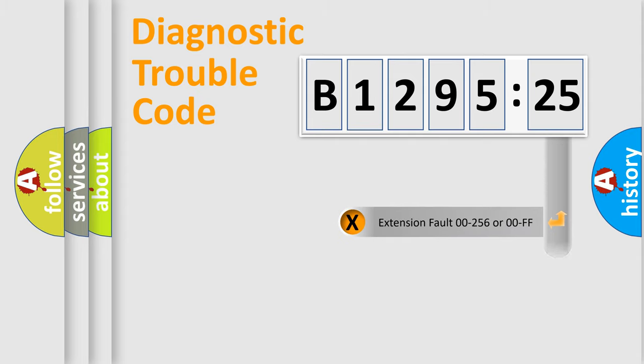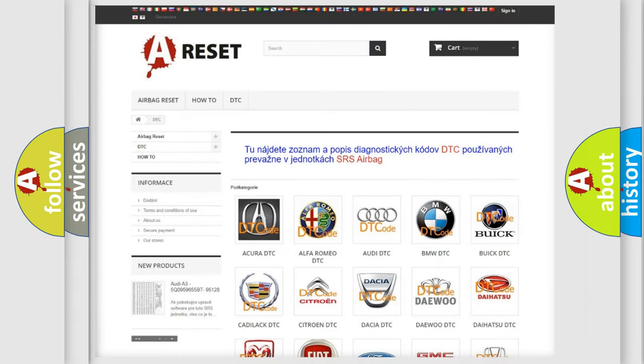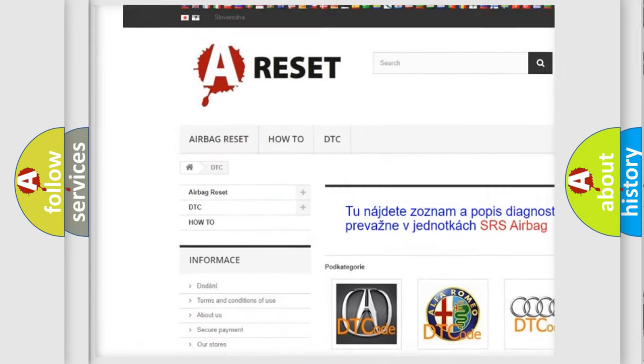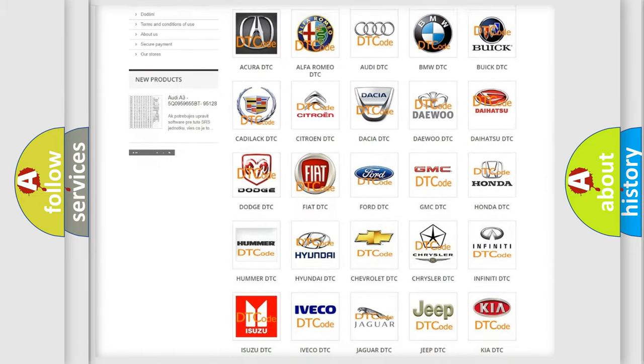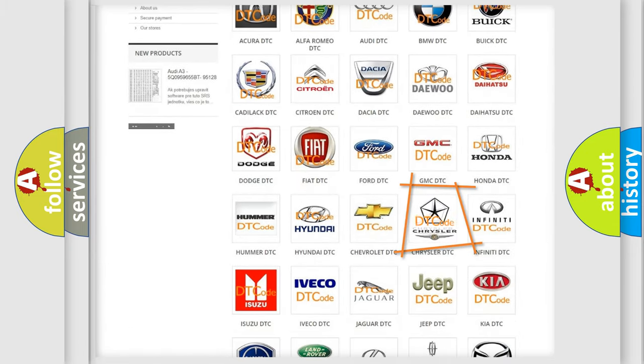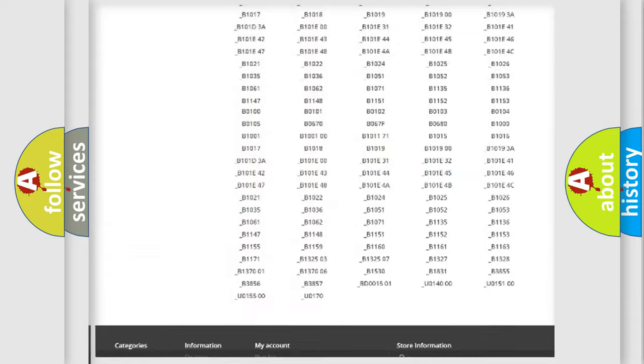Our website airbagreset.sk produces useful videos for you. You do not have to go through the OBD2 protocol anymore to know how to troubleshoot any car breakdown. You will find all the diagnostic codes that can be diagnosed in Chrysler vehicles, and many other useful things. The following demonstration will help you look into the world of software for car control units.